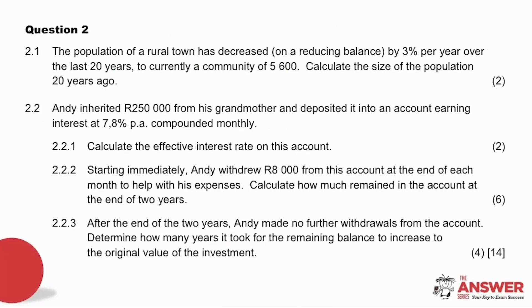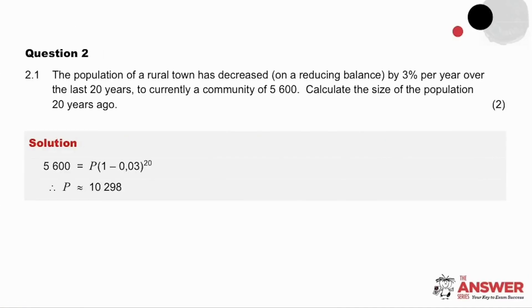On to question 2 now. Pause the video to read through the whole question and then give the solution your best effort. So a small 2 mark question to start with. Here we have that a population has decreased. So with this and the words on a reducing balance means we must use the compound decrease formula. The population is sitting at 5,600 people and they want to know the size of the population 20 years ago, which means that even though the 5,600 is the current population size, in this time frame it is the future amount and they are wanting to know the size of the population 20 years ago. This answer tells us that there were about 10,298 people in this rural town 20 years ago.